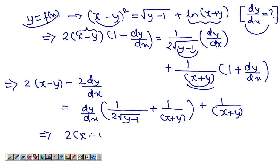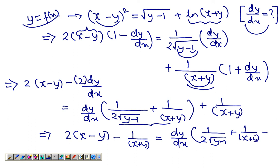Let's take all the terms having dy/dx on one side. This comes here from the RHS and 2 dy/dx goes there, giving us 2(x - y) minus 1 over (x + y) equals dy/dx times [1 over 2√(y - 1) plus 1 over (x + y) plus 2]. So dy/dx is the thing on the LHS divided by this thing on the RHS. That's the answer. That's where you use implicit differentiation.